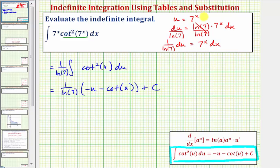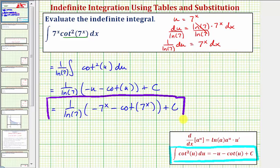Now we'll substitute seven to the x for u. So we have one over natural log seven times the quantity negative seven to the x minus cotangent seven to the x plus c. This is our antiderivative, which means the derivative of this function equals the integrand function f of x equals seven to the x cotangent squared seven to the x. I hope you found this helpful.